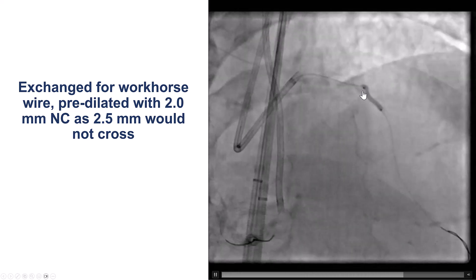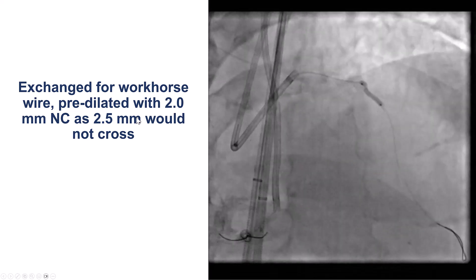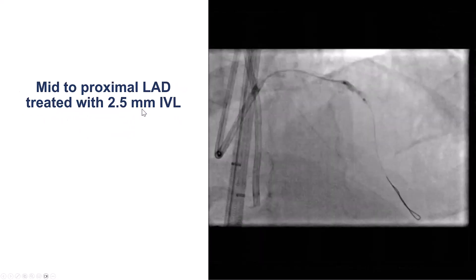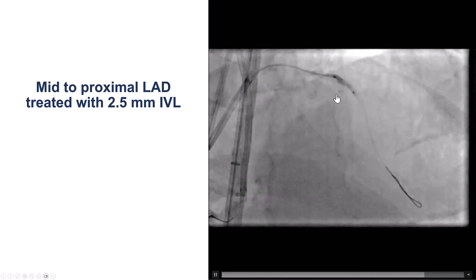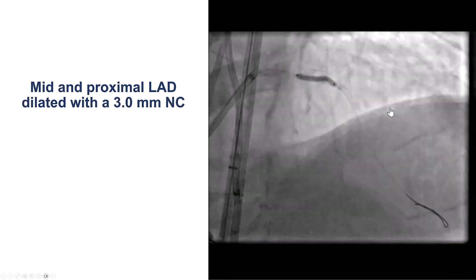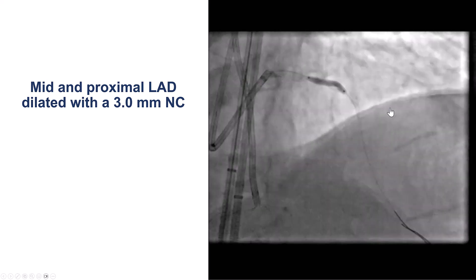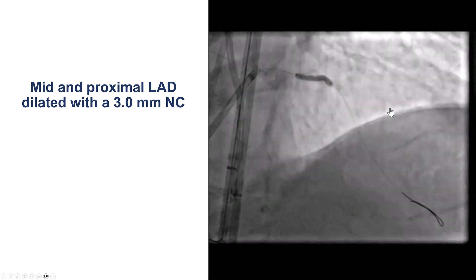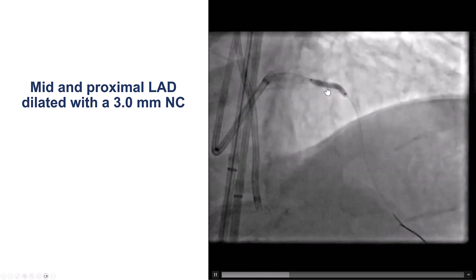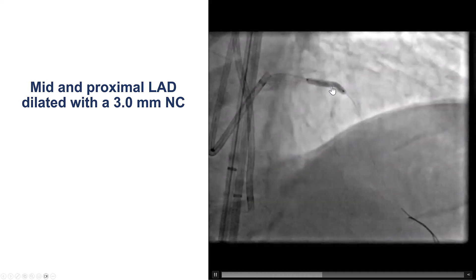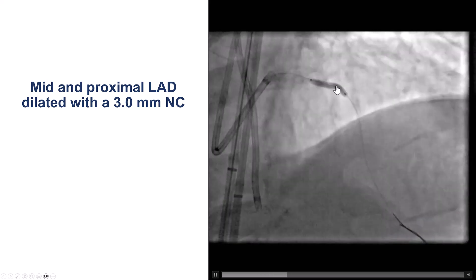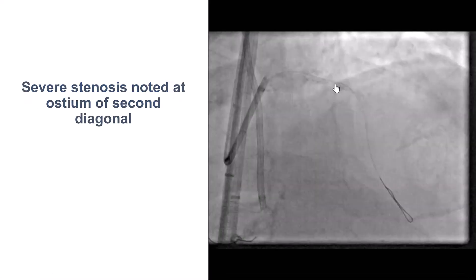We do see there is a waist on the predilatation balloon. We then used intravascular lithotripsy with the Aero, the newer intravascular lithotripsy catheter. We did 120 pulses, and then dilatation with a 3.0 mm NC balloon after doing IVUS, which seems to expand well. There is still a slight area of underexpansion right at the area of the bend, which is distal to the CTO and corresponds with the significant calcium.